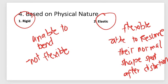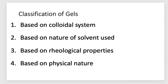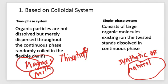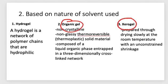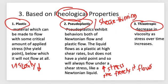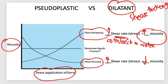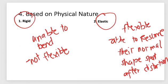To summarize, the classifications of gels are: based on colloidal system — two-phase and single-phase; based on nature of solvent — hydrogel, organic gel, and serogel; based on rheological properties — plastic, pseudoplastic, and thixotropic, with dilatant or shear thickening as the counterpart of pseudoplastic; and based on physical nature — rigid and elastic.